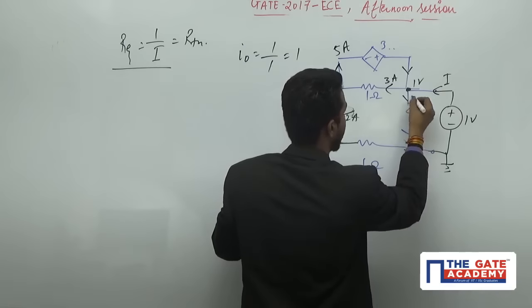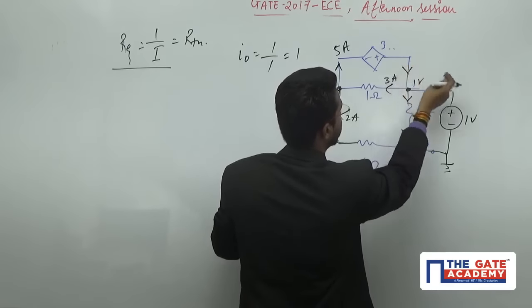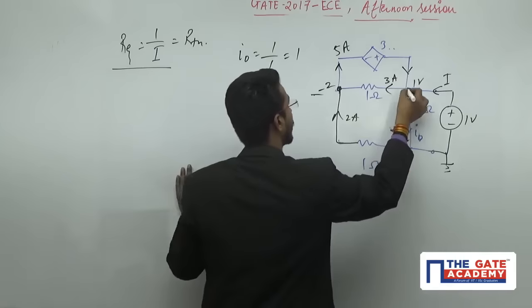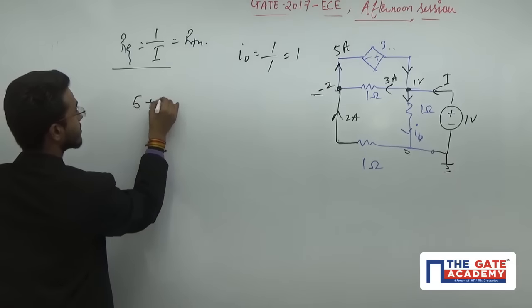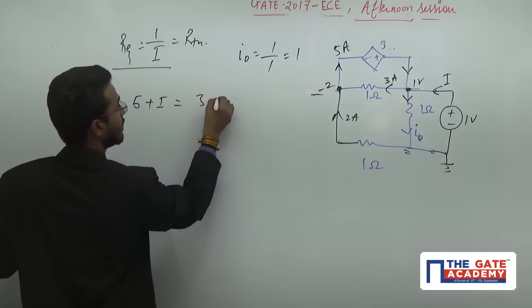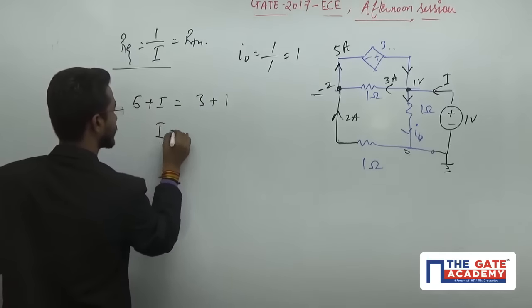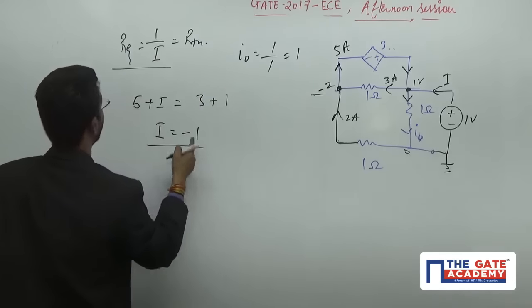This is outgoing and these two currents are incoming. Apply the nodal at this node: five plus I equals three plus one, so I equals minus one.